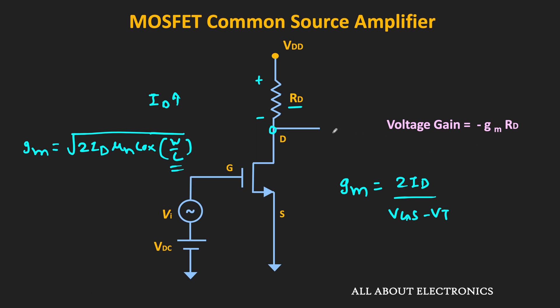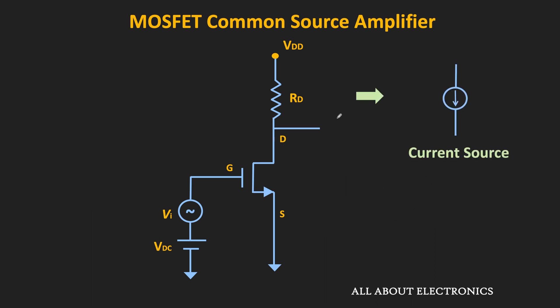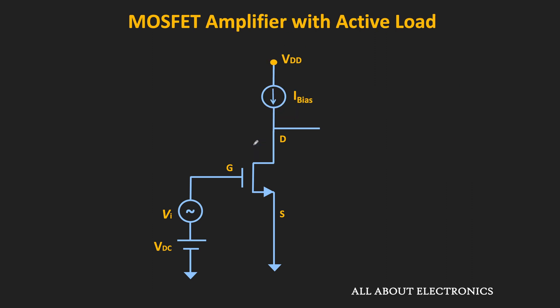By increasing the power supply voltage we can increase the gain to some extent, but that is not the case in ICs where the power supply voltage is shrinking day by day. However, this problem can be overcome if we replace the resistor with a current source. If we assume this current source is ideal, it will act as an active load. With an ideal current source there are two advantages: the biasing current will be independent of temperature as well as the device parameters of the MOSFET, and during small signal analysis the ideal current source can be replaced by an open circuit. If the output resistance of the MOSFET is infinite, then ideally the gain of this amplifier will be infinite. But since the MOSFET has finite output resistance, the gain will also be finite.